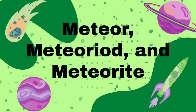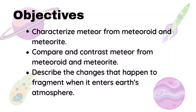Today's lesson, we will learn the difference of meteor from meteoroid and meteorite. At the end of this lesson, students are expected to characterize meteor from meteoroid and meteorite, compare and contrast meteor from meteoroid and meteorite, and describe the changes that happen to a fragment when it enters Earth's atmosphere.